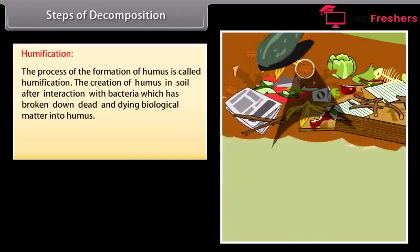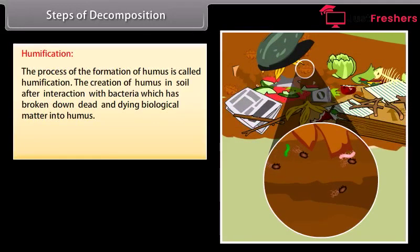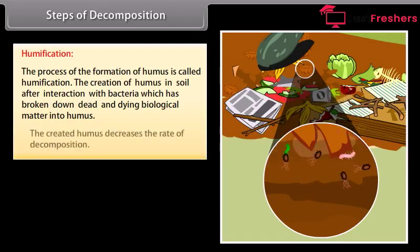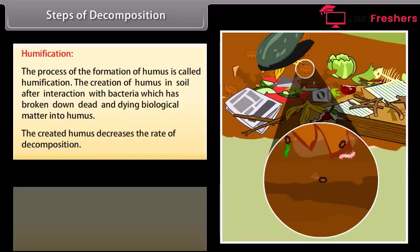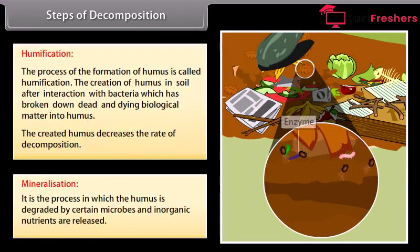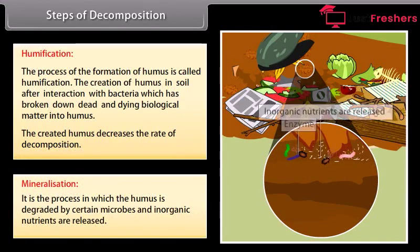Humification: the process of formation of humus is called humification. The creation of humus in soil after interaction with bacteria, which has broken down dead and dying biological matter into humus, decreases the rate of decomposition. Mineralization: it is the process in which the humus is degraded by certain microbes and inorganic nutrients are released.